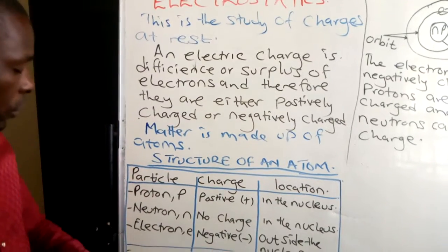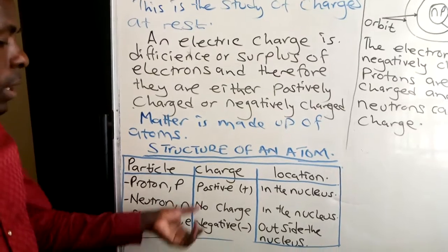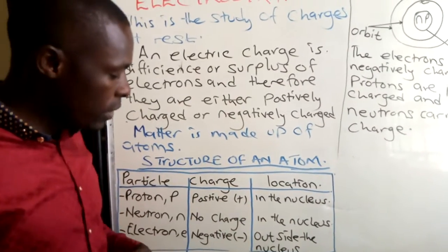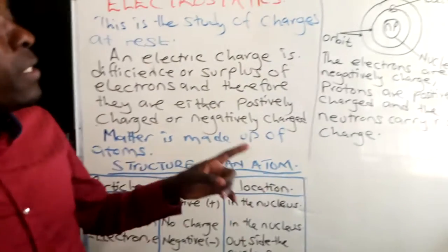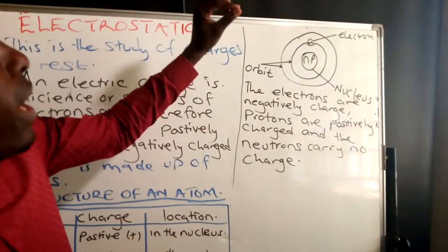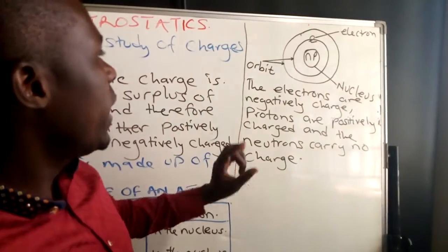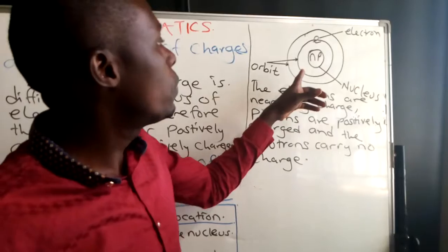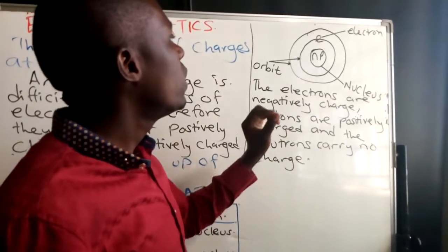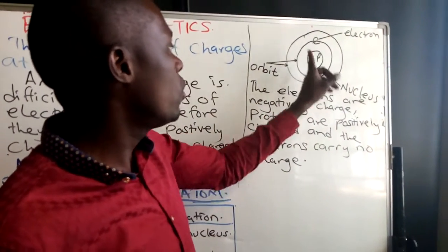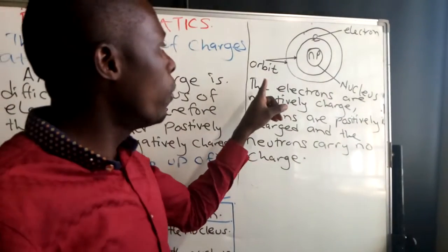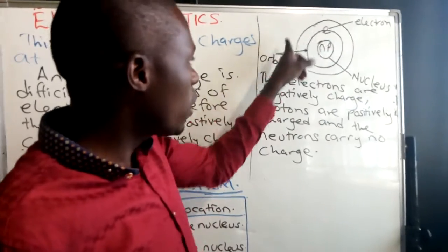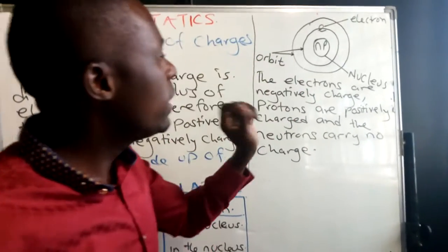Then we come to the electron, which is E. This one is negatively charged, which is on the outside of the nucleus. This brings us to our diagram, our circular diagram, where we are seeing the nucleus, which is having the neutron and the proton. Then we come to the next shell or the second shell, which we call the orbit. This orbit is having electrons. So this is the structure of an atom.